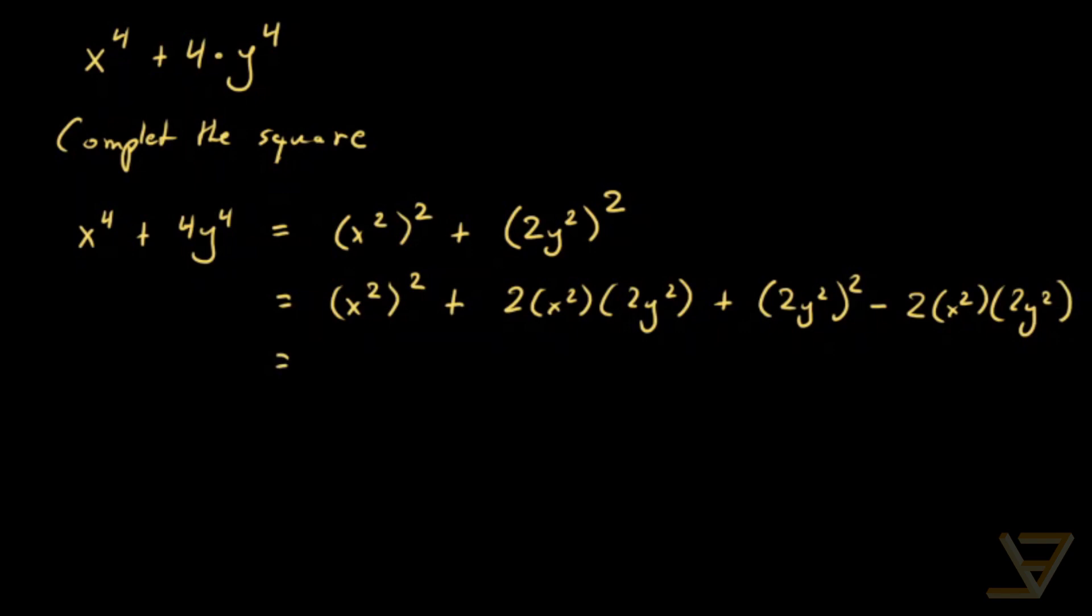And now we can factor the first three terms to get x squared plus 2y squared squared. And the last term is 2xy squared. And now we have a difference of squares.